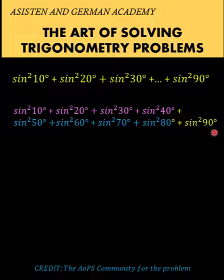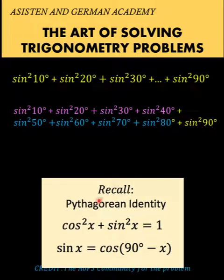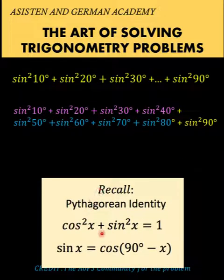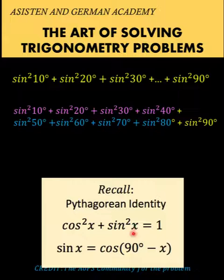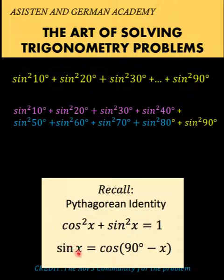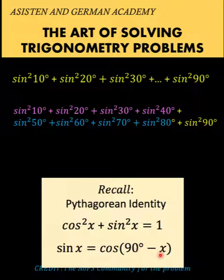Now let's recall two identities. We have the Pythagorean identity that says cosine squared of an angle x plus sine squared of the same angle x is equal to one. And the sine of x is equal to the cosine of the complement of x, which is 90 degrees minus x. We are going to use these two identities to simplify our expression.